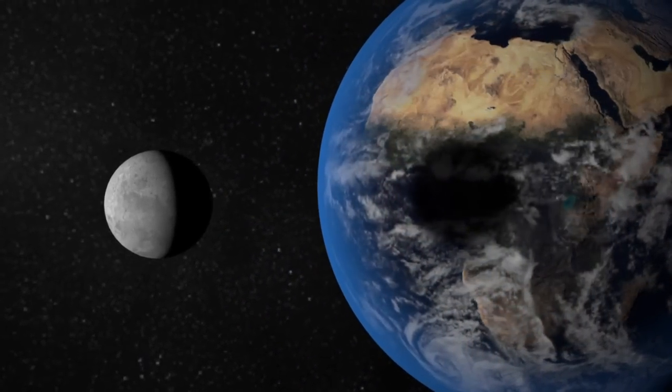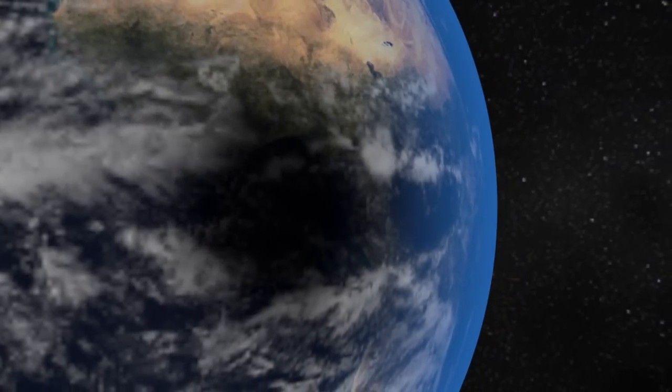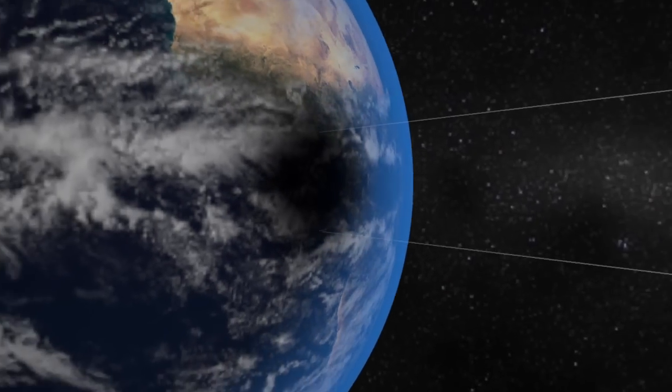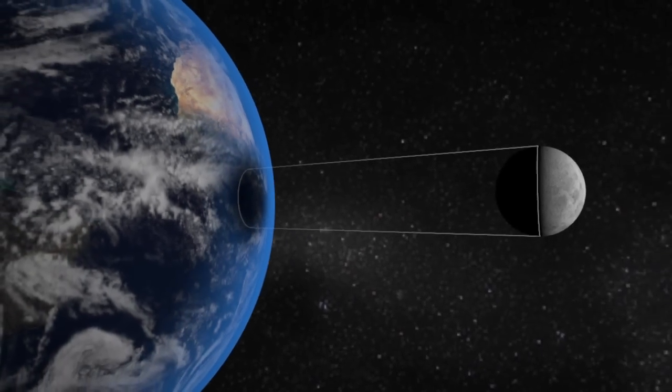To see a total solar eclipse, you have to be in the narrow path of totality. This is the area where the moon's complete shadow, known as the umbra, falls on the Earth.